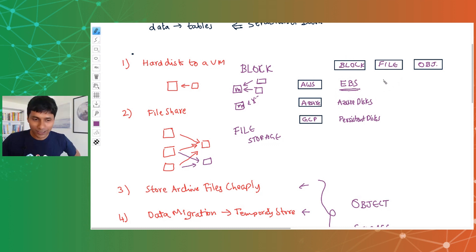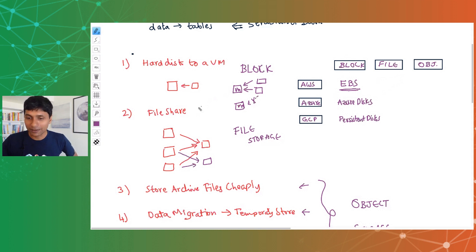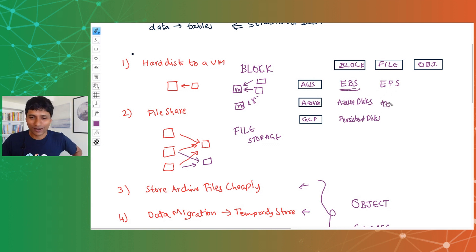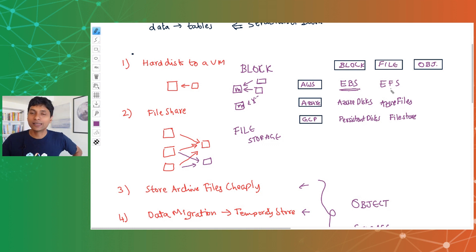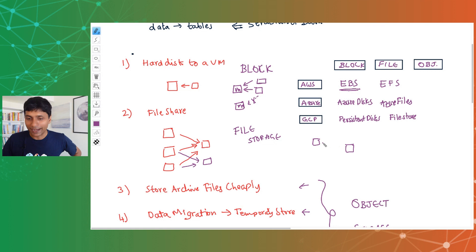Now let's look at the file share services. If you want to create a file share and attach it with multiple VMs, the service in AWS is EFS — Elastic File Store. In Azure, it's called Azure Files. And in Google Cloud, it's called Cloud Filestore. You can create a file share and attach it to multiple VMs. Once attached, VMs can execute commands to access the file share and do both reads and writes.